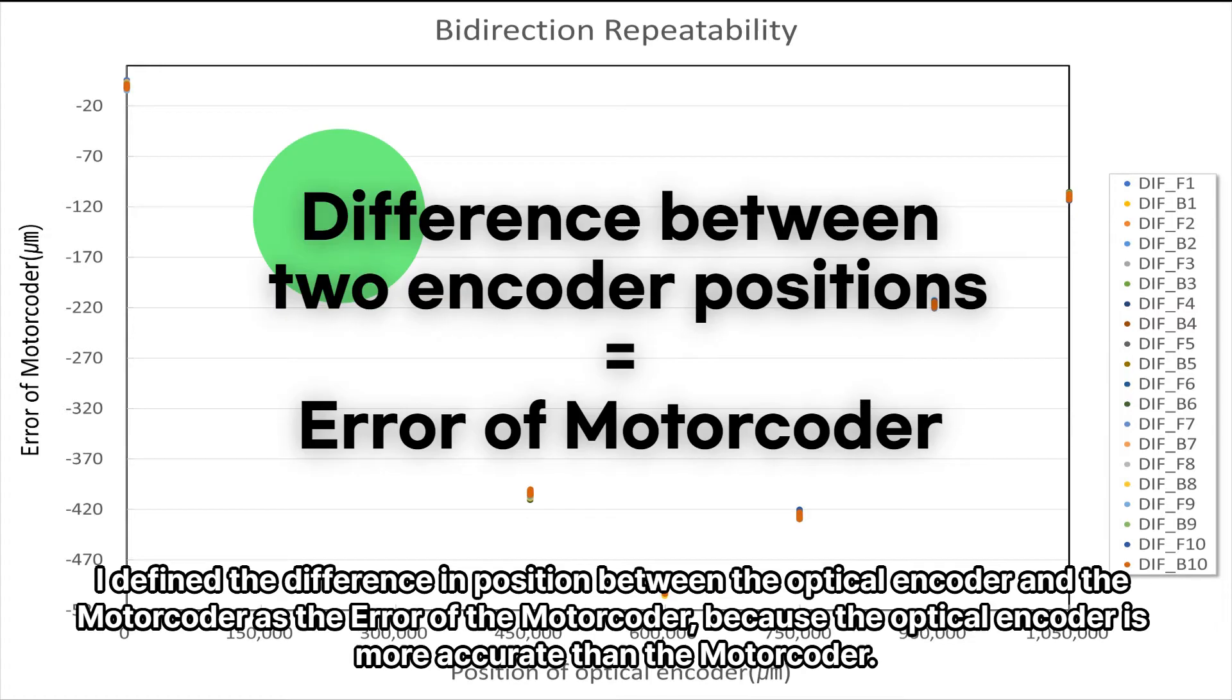I define the difference in position between the optical encoder and the motor coder as the error of the motor coder, because the optical encoder is more accurate than the motor coder.